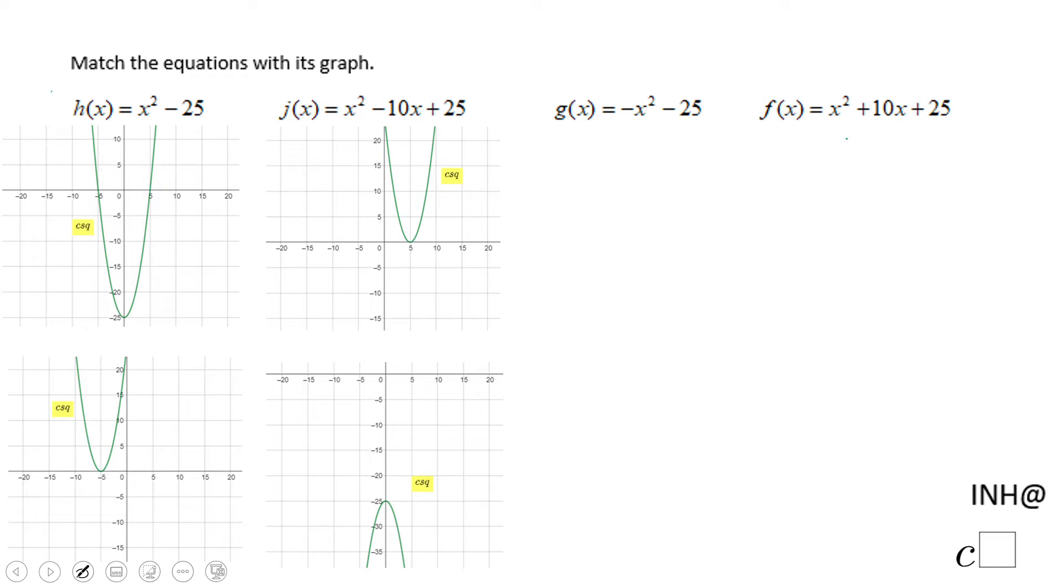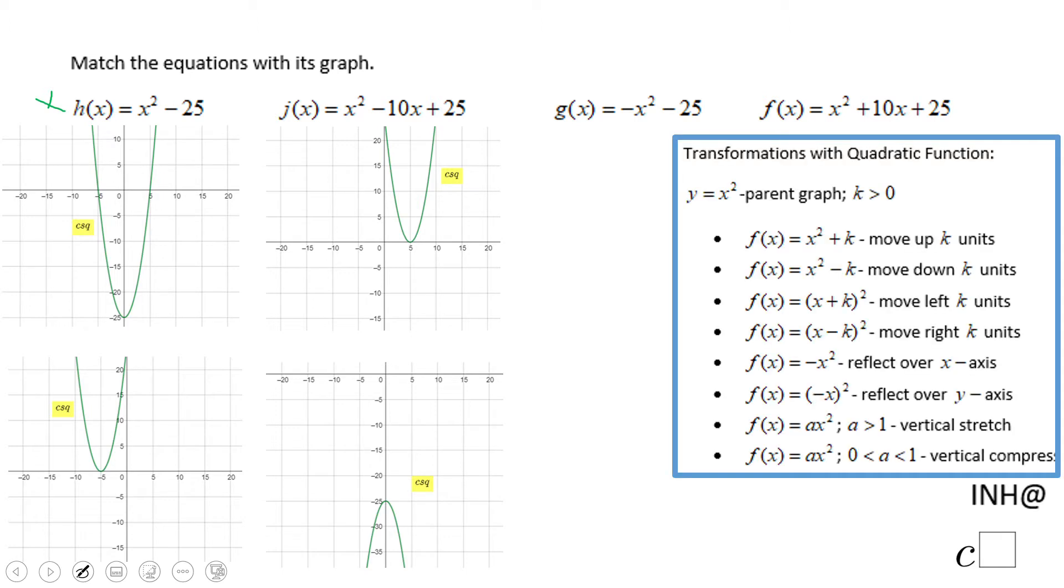For the first one here, we can use the transformations you see on the right. We have x² - 25, which moves down 25 units. This tells me this is the correct graph.